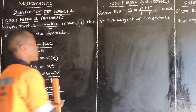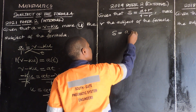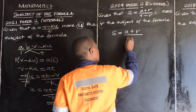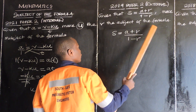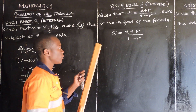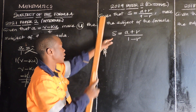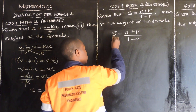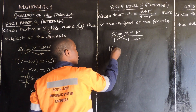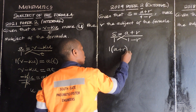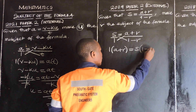Let us look at 2019 paper 2. It says given that S is equal to A plus R over 1 minus R, and we are told to make R the subject of the formula. The subject is S, but we need to change from S to R. Step number one, as usual, you say over 1, then cross multiply: 1 multiplied by A plus R is equal to S multiplied by 1 minus R.